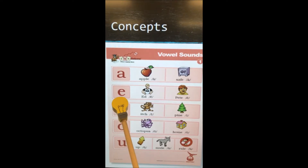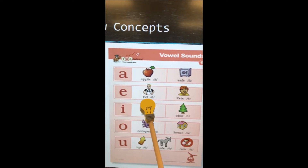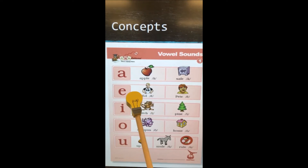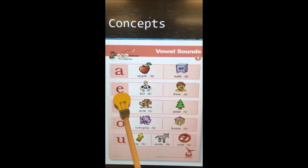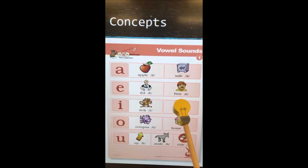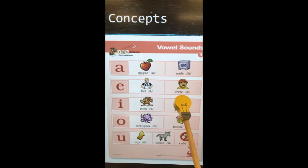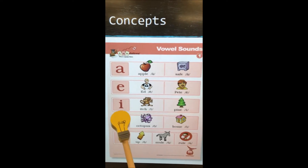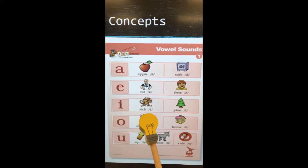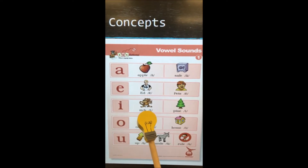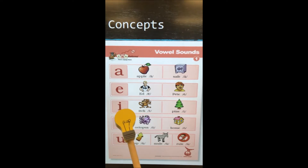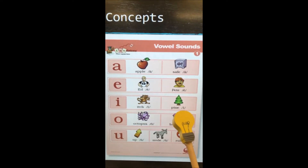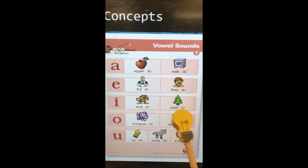E: short sound — ed, eh. Long sound: E, Pete — E. I: short sound — itch, ih. Long sound: I, pine — I.